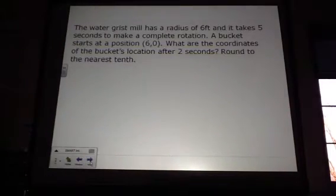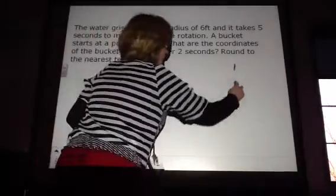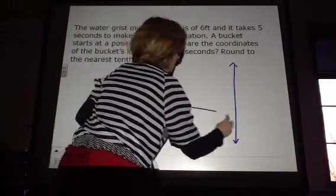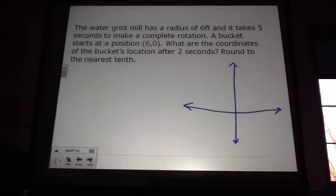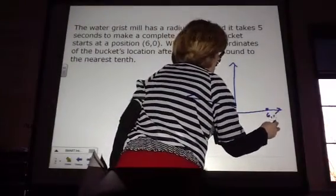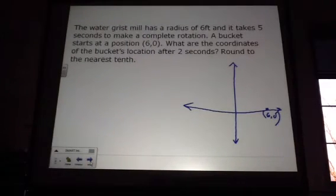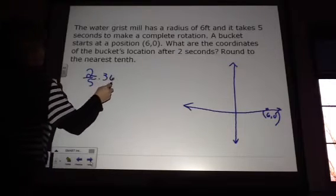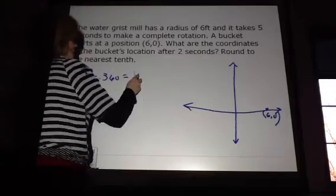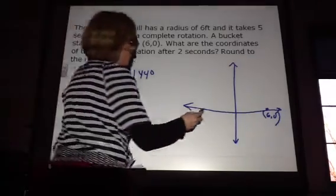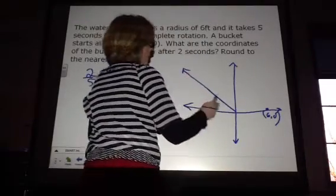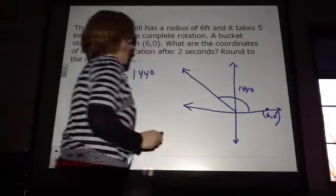Okay, last one. Okay, so when we draw this one, I'm trying to hurry so I don't have to do a second video here. Let's see, we have a radius of 6 feet. So this is 6, 0. It takes 5 seconds to make a complete rotation. A bucket starts at a position 6, 0. Got that? What are the coordinates of the bucket after 2 seconds? So 2 out of 5 times 360, and what do you get? You get 144 degrees. So 144 degrees is going to be over here somewhere. Because this is 144 degrees.